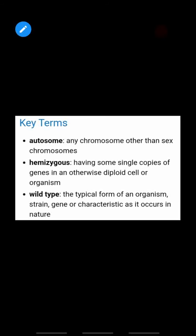First of all, what are key terms? There are two or three terms which you will need to understand. What are autosomes? In every cell there are two types of chromosomes: one is autosome and one is sex chromosomes. The sex chromosomes determine sexual traits, while autosomes are the non-sex chromosomes.